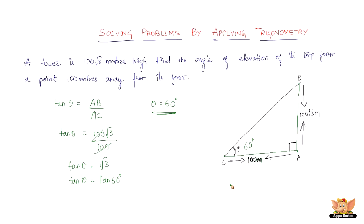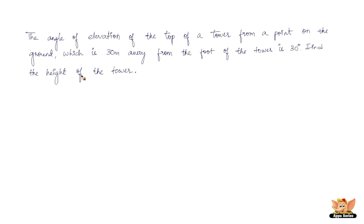Let us quickly solve another problem. The angle of elevation of the top of a tower from a point on the ground, which is 30 meters away from the foot of the tower, is 30 degrees. Find the height of the tower — another straightforward question.